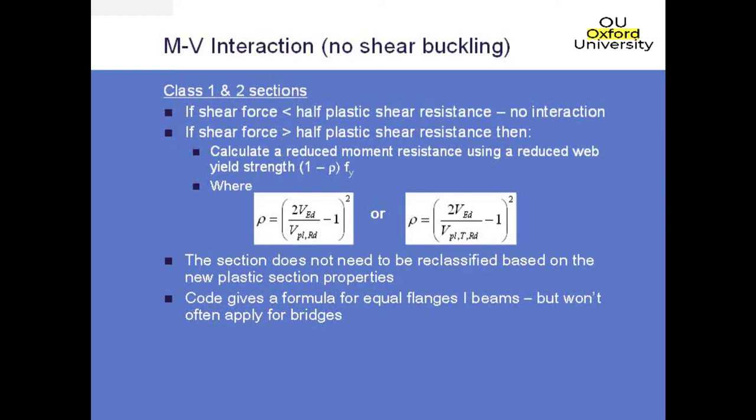If you're dealing with bridges, you have to use a revised plastic resistance moment. That's just found by determining the plastic neutral axis and calculating the moment resistance about that axis for the reduced section properties. So it's a little bit more calculation if you don't have a symmetrical section, but generally speaking it's what you're stuck with if you're doing a bridge design.